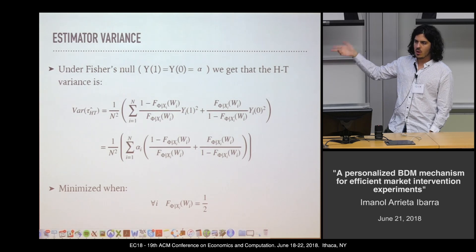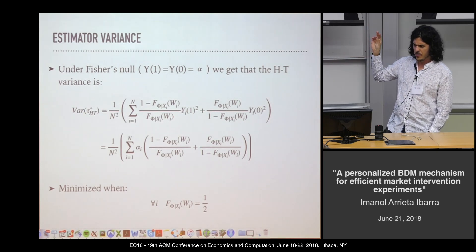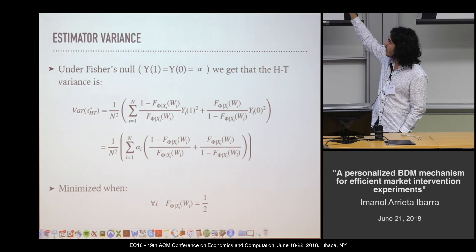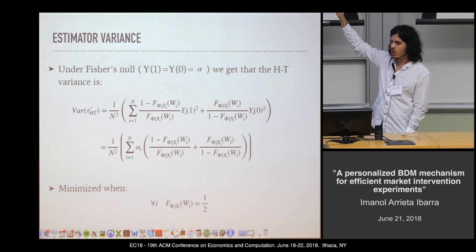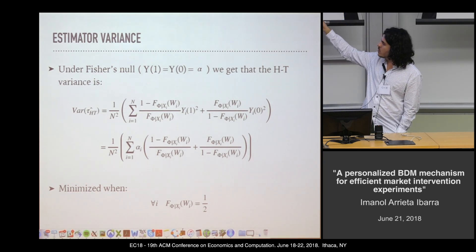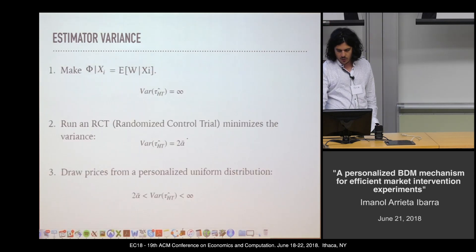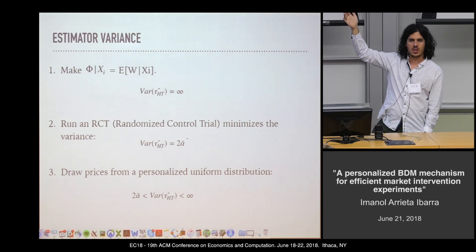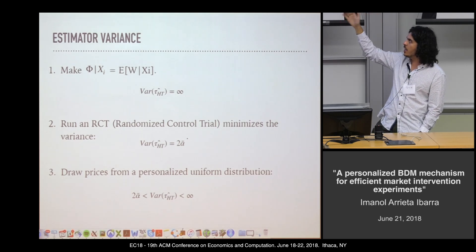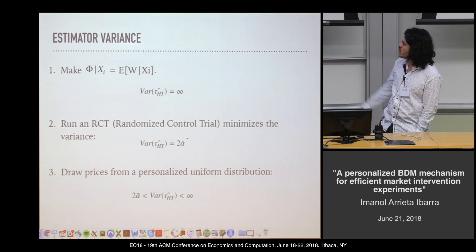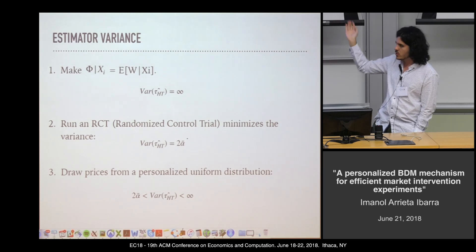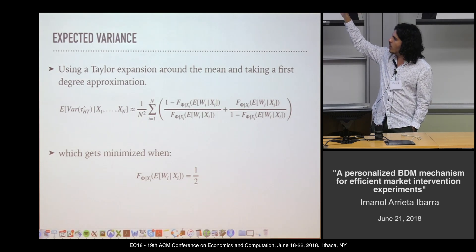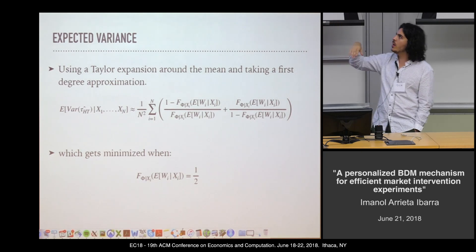We have three objectives: lower variance in our estimates, lower costs, and incentive compatibility. In terms of estimator variance — under Fisher's null (no treatment effect) — variance is minimized when the probability of being treated equals one-half. Among the three alternatives, the RCT minimizes variance. The first approach of simply predicting the conditional willingness to pay actually has variance equal to infinity. Drawing prices from the personalized uniform distribution gives something in between. Importantly, in expectation, PBDM has a lower expected variance than BDM.